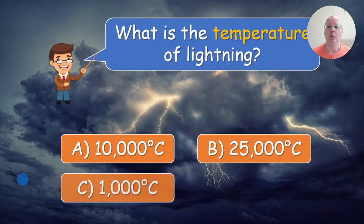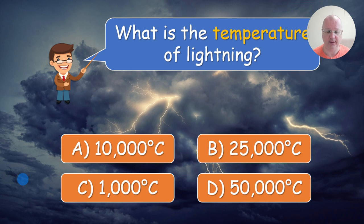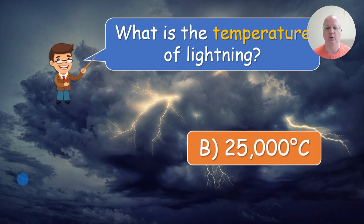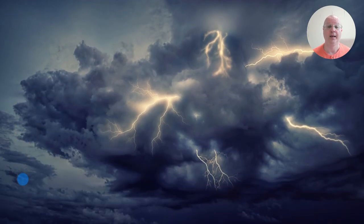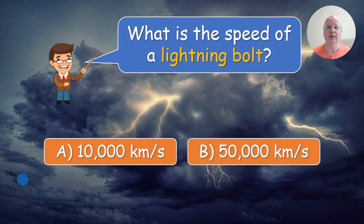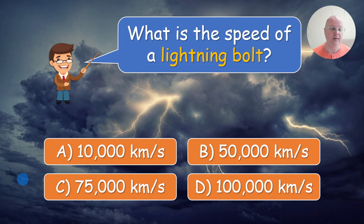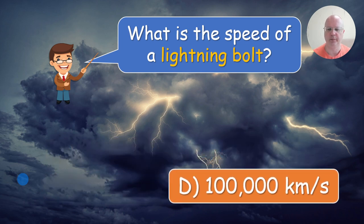Here's the next question: what is the temperature of lightning? The correct answer is 25,000 degrees Celsius. Next one: what is the speed of a lightning bolt? The correct answer is 100,000 kilometers per second. In this case, you will be inviting a new pair of students.